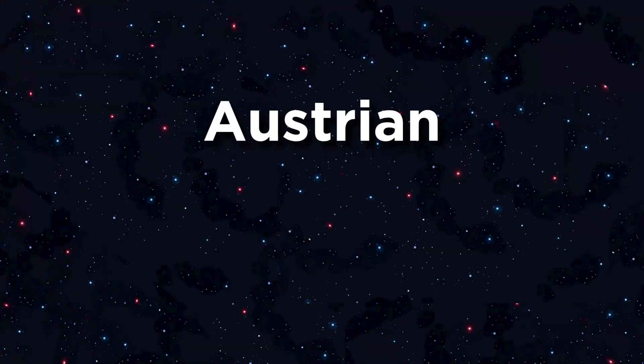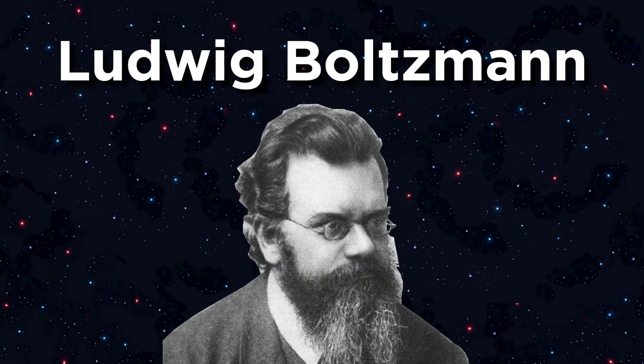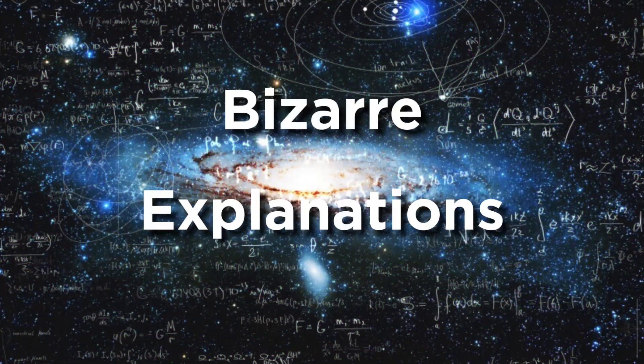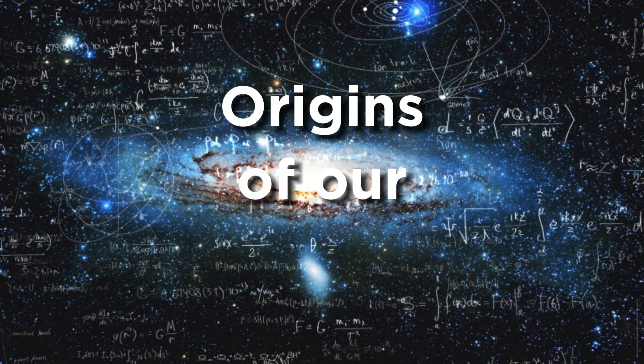In 1896, Austrian physicist Ludwig Boltzmann proposed a concept that would eventually lead to one of the most bizarre explanations for the origins of our universe, the Boltzmann brain.